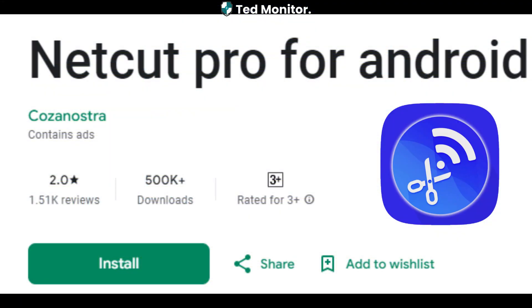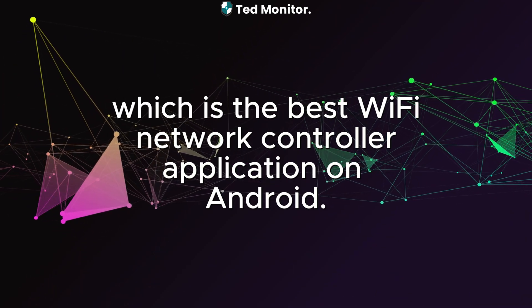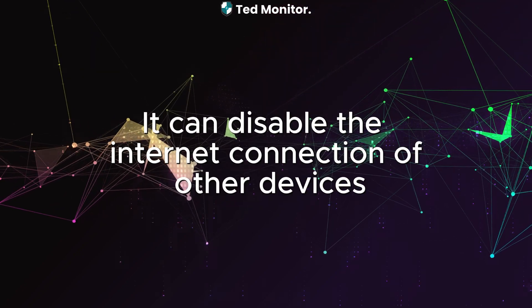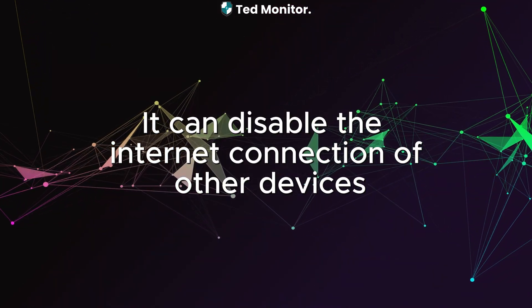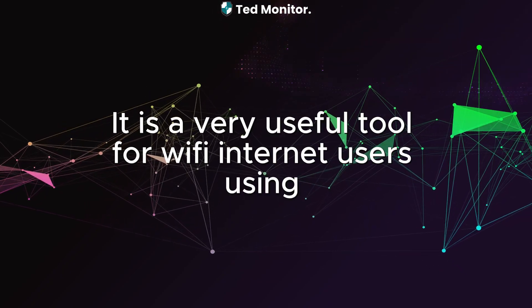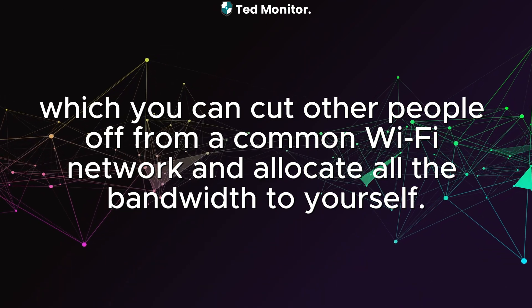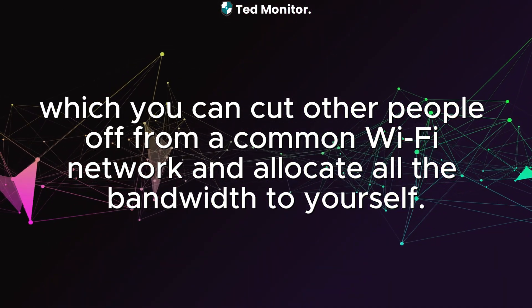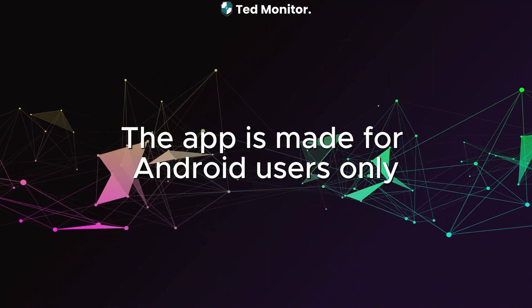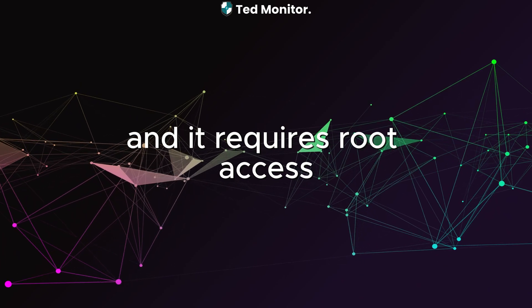Number 3: NetCut Pro. It's a free Wi-Fi analyzer and the best Wi-Fi network controller application on Android. It can disable the Internet connection of other devices connected to the same Wi-Fi network. You can cut other people off from a common Wi-Fi network and allocate all the bandwidth to yourself. The app is made for Android users only and requires root access.